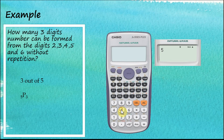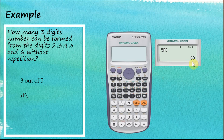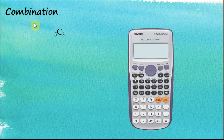On the calculator, enter 5, then Shift P, then 3, and the answer is 60. So 60 three-digit numbers can be formed from those five digits. Now let's move on to combinations — our calculator can handle those too.